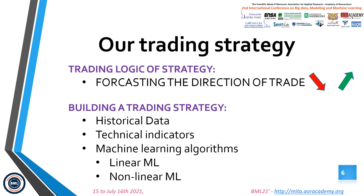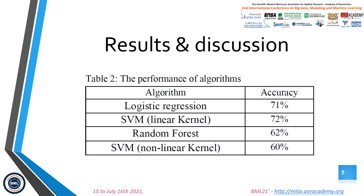By using machine learning we can forecast many things like the next price, next returns, or next price directions. The goal of our strategy is to forecast the price direction, and for that we have used two types of machine learning algorithms: the first is linear algorithms and the second is non-linear algorithms. As results, we found that both the linear and the non-linear algorithms have achieved an accuracy between 60% and 72%. For traders, this is a good result.